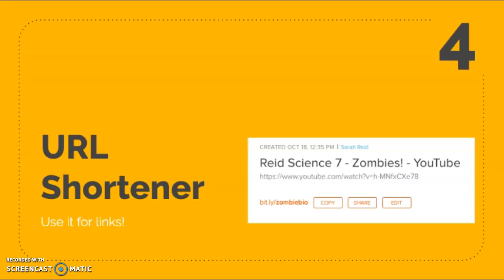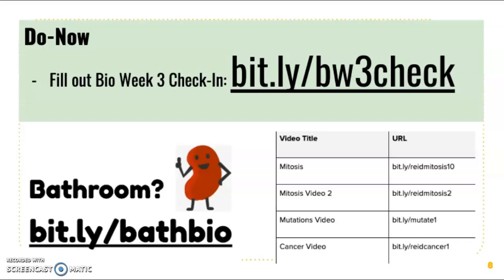Let's talk about URL shorteners. I have my students accessing a lot of websites or technology within the classroom — some videos, some things online, some documents — and it's really great to use a URL shortener like bit.ly or TinyURL. Google also has one. I like bit.ly. You can create an account, easily enter the URL you want to shorten, and then edit the shortened URL. For example, I directed one to a zombie video and created bit.ly/zombiebio — a really quick and short URL.